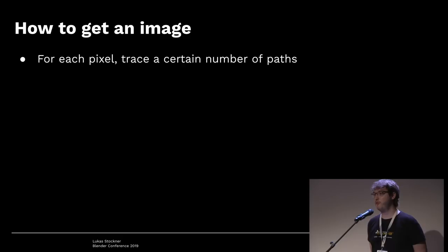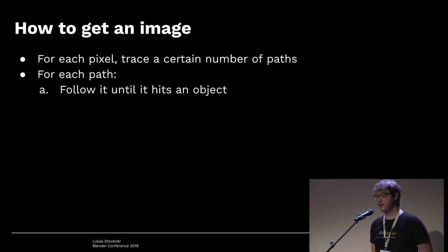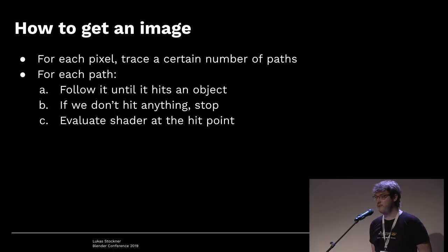So how do we use this to get an image? We need to trace light paths for each pixel. We start from every single pixel to ensure that every pixel gets a certain number of rays. For each pixel we loop over all samples, and for each sample we trace one path. We start the path at the camera, follow it until it hits an object. If we don't hit anything, we hit the world background and use that color.